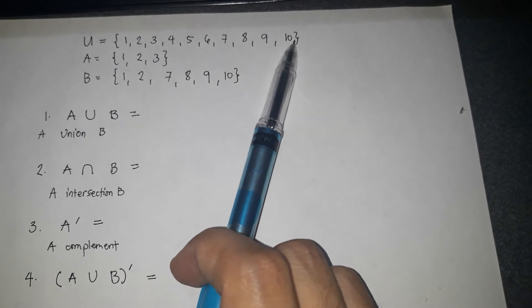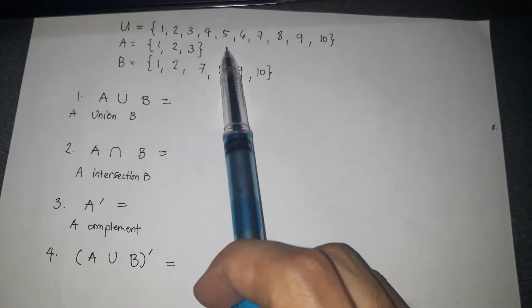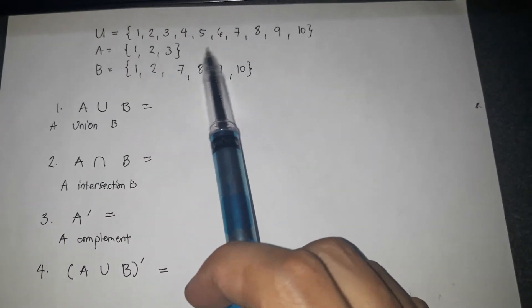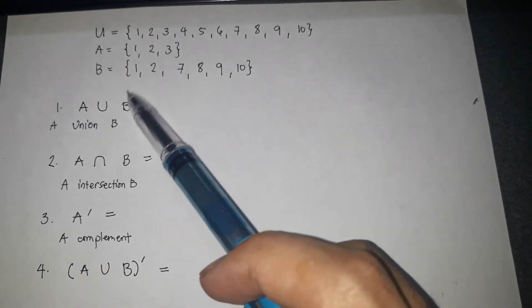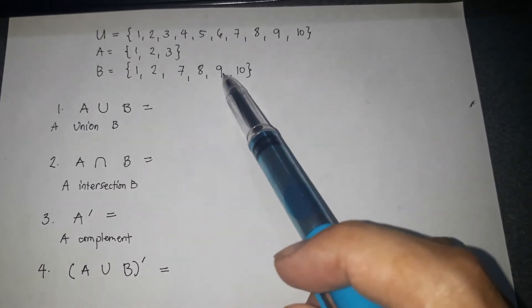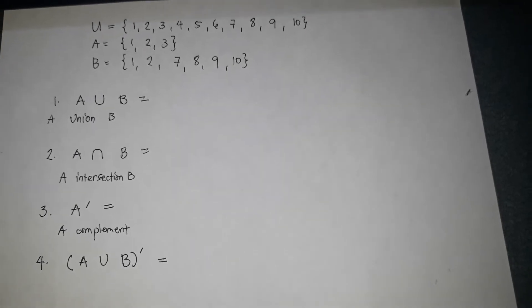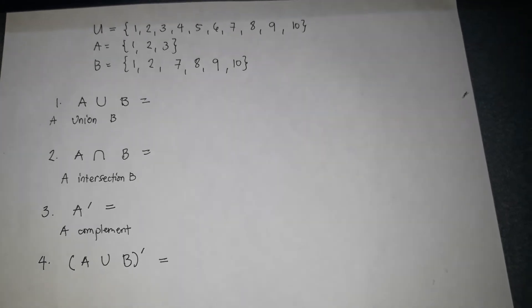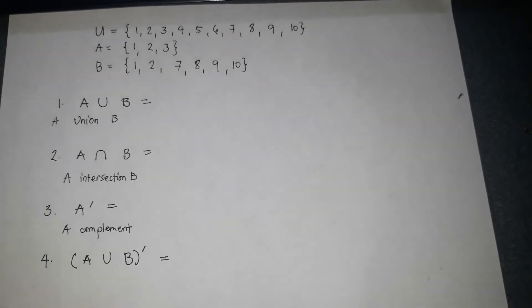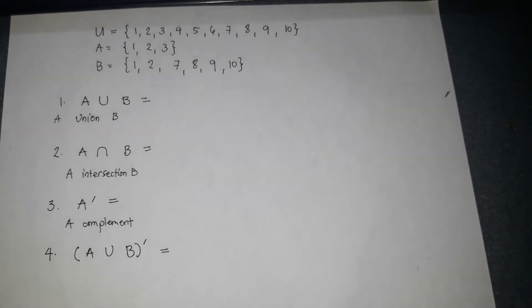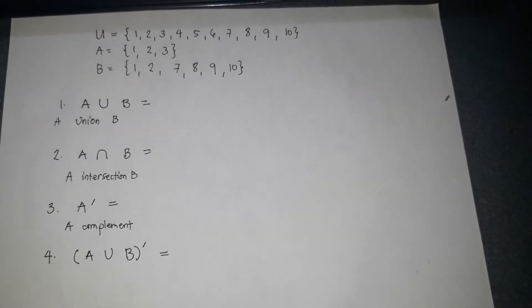For set A, the elements are 1, 2, and 3. For set B, the elements are 1, 2, 7, 8, 9, and 10.